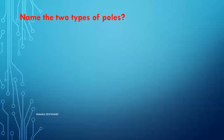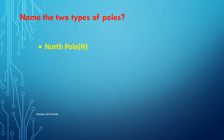Name the two types of poles. There are two types of poles. First one is North Pole, which is denoted by capital N. Second one is South Pole, which is denoted by capital S.